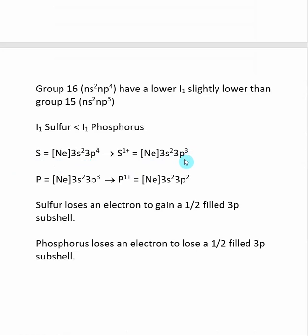A half-filled P subshell contains three electrons, and remember, a half-filled subshell is stabilizing. So in going from neutral to positively charged, sulfur gains a half-filled 3P subshell.